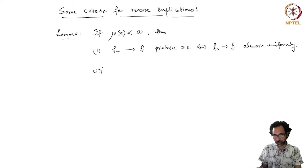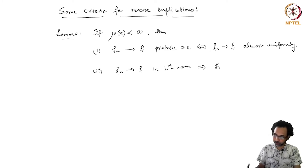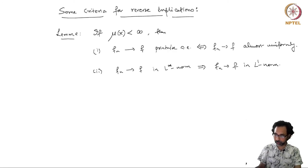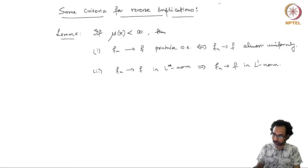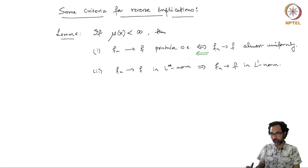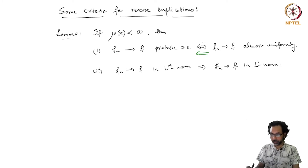Secondly, if fn converges to f in L-infinity norm, this implies that fn converges to f in the L1 norm as well. This implication we had already seen. This lemma says that when the measure space has finite measure, the forward implication also holds.